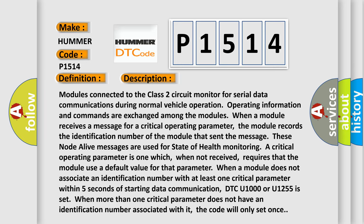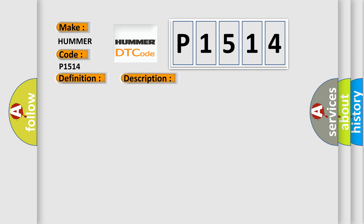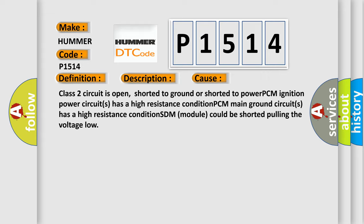This diagnostic error occurs most often in these cases: Class 2 circuit is open, shorted to ground, or shorted to power. PCM ignition power circuits has a high resistance condition. PCM main ground circuits has a high resistance condition. SDM module could be shorted pulling the voltage low.